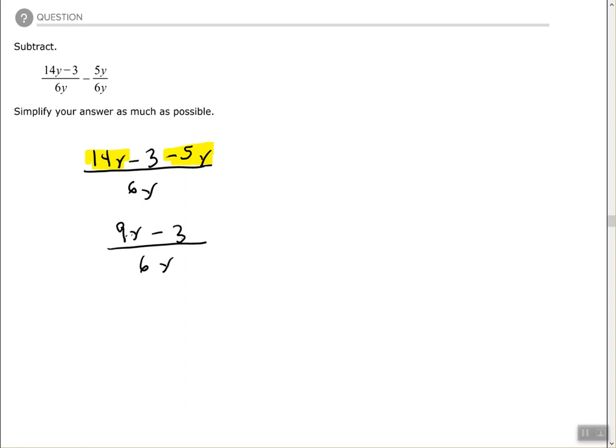If I factor out 3 from 9y and 3 in the numerator, if I factor out 3, I get 3 times (3y minus 1). In the denominator, 6y equals 3 times 2y.